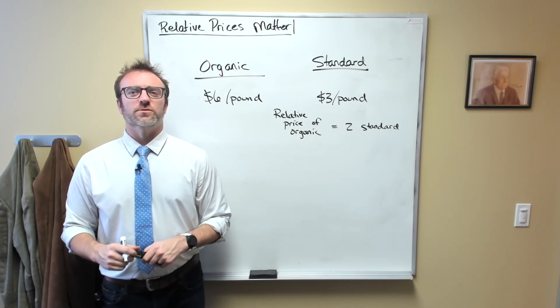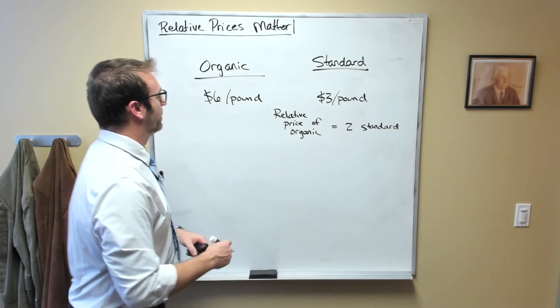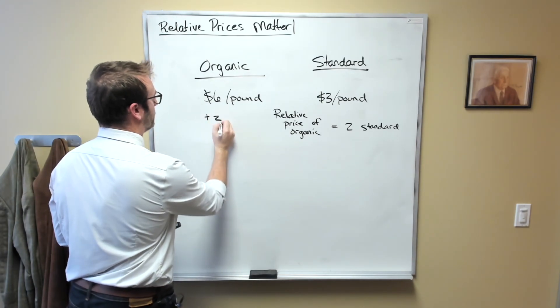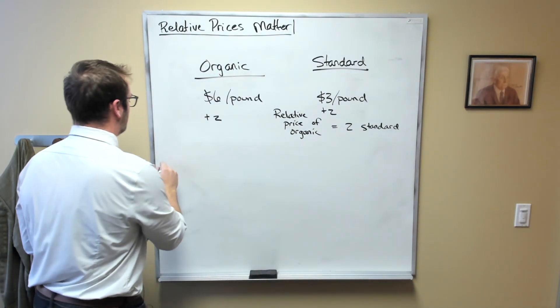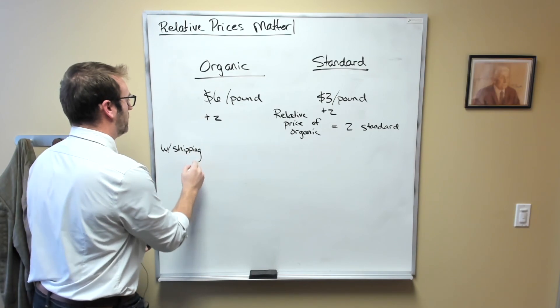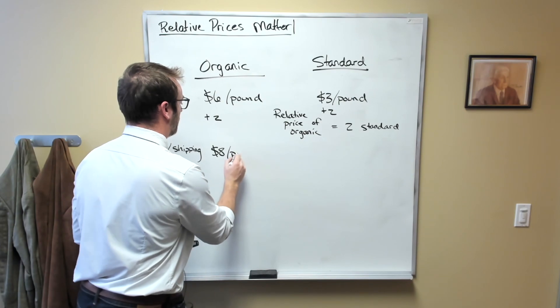What does this do to the relative price of organic apples? Let's figure it out. We would add $2 to here and $2 to here. With shipping, the total price of organic apples would be $8 per pound.